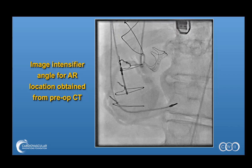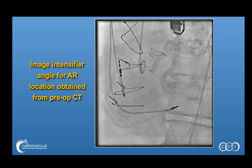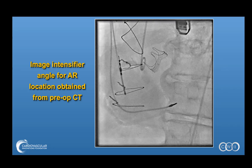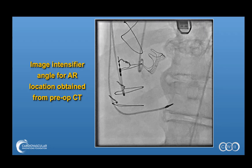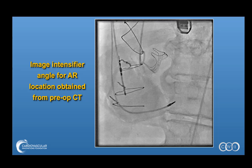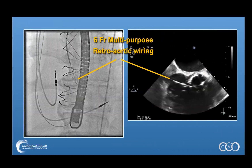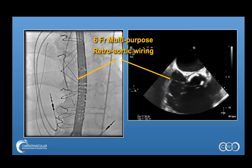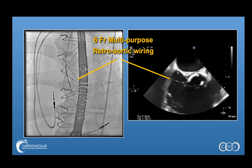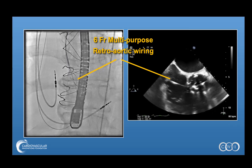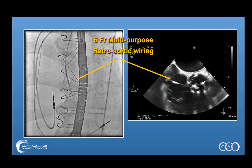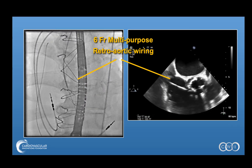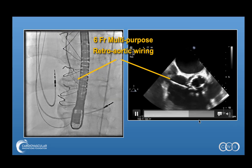If the image intensifier is not positioned in this view, then the wiring would be difficult because it would be difficult to see if one was behind or in front of the prosthesis. In this view with the exteriorization, the fistula is easily seen. This is a simple 6 French multipurpose guide catheter and a straight glide wire, which has been passed retrograde across the aortic valve into the right atrium. This is confirmed on both fluoroscopy as well as echocardiogram.